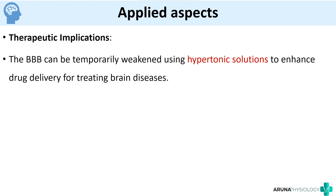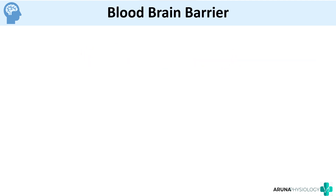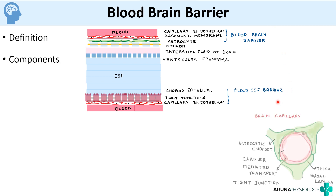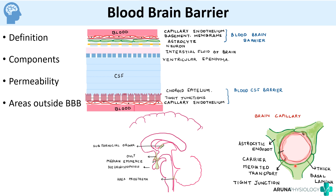The blood-brain barrier can also be temporarily weakened using hypertonic solutions, which can be used for enhanced drug delivery in treating diseases. In summary, we've covered: the definition of the blood-brain barrier including the blood-CSF barrier, the components such as tight junctions, basal lamina, and astrocytes, the permeability of substances, areas outside the blood-brain barrier, and finally the functions and applied aspects.